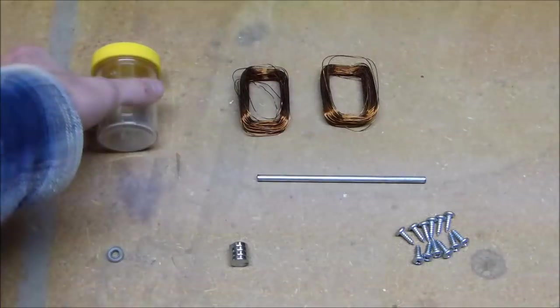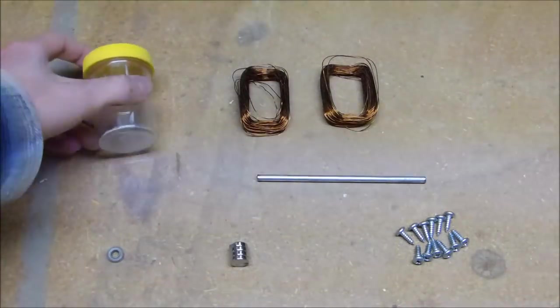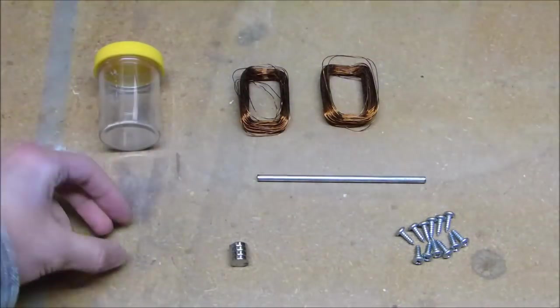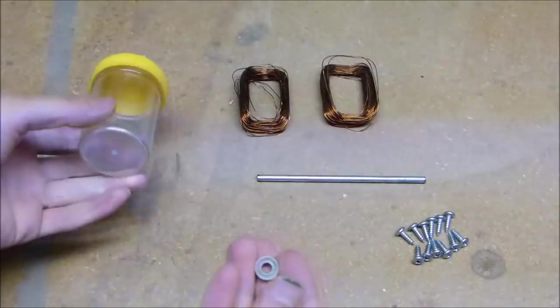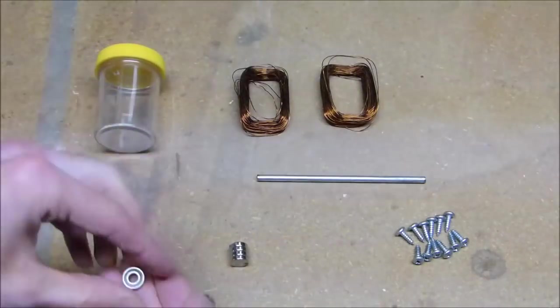I have laid out here the parts for a small brushless DC electric motor that I'm going to show you how to make. I only actually have one ball bearing, but if you have two that would be better.